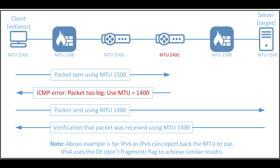However, practical problems are being experienced within the current Internet, caused by systems, e.g. some firewalls, that do not return the required ICMP messages back to the sender. The widely deployed version of PMTUD relies on messages received from the ICMP protocol.